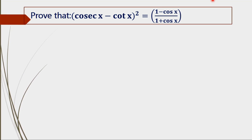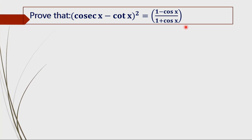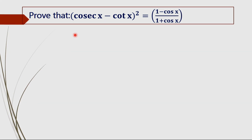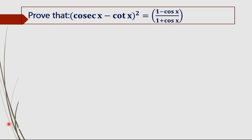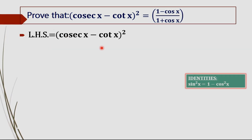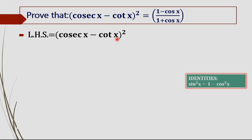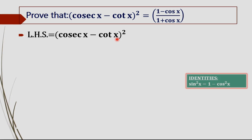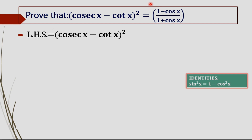For proving this, we first take the LHS of the equation — the left-hand side — which is (cosec x minus cot x) whole square. Now we are going to simplify this LHS to get the RHS of the equation.